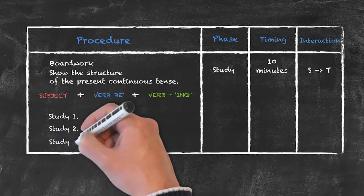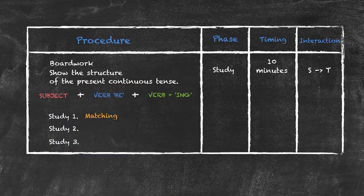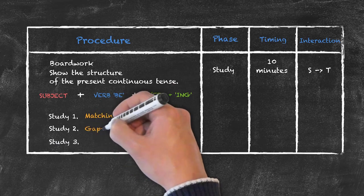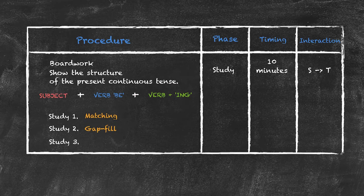The first one is going to be a fairly straightforward matching activity where perhaps they match the subject to its correct verb to be in that part of the sentence. The second one is going to be a gap fill. For example, I might use this verb here and ask them to complete a sentence using that verb.